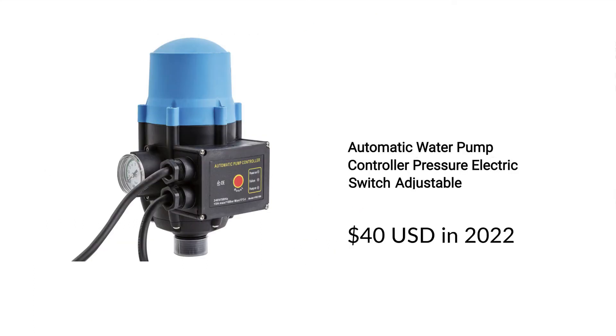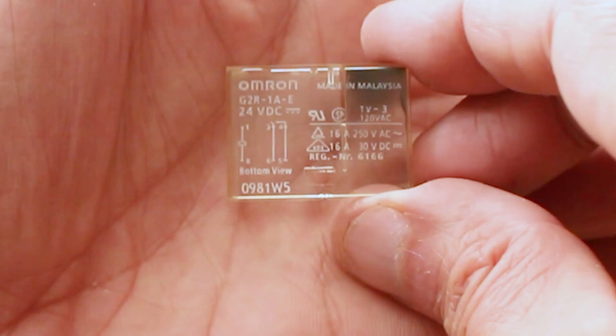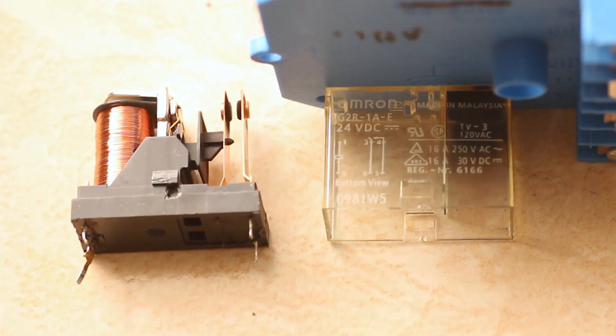Meanwhile I installed a new pump controller which costs around $40. When the new relay arrives I'll bring the old pump controller back to life and keep it as a backup. I got lucky with this fix as the damaged component was easily identifiable, which isn't always the case.